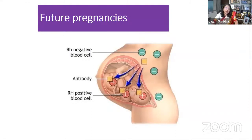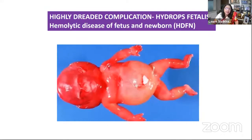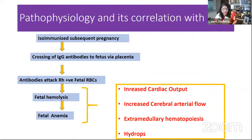In future pregnancies, if the mother is sensitized, antibodies are already present in the maternal circulation. When there is a breach, these antibodies cross the placental barrier, enter the fetal circulation, and start causing hemolysis in the fetus. This is the dreaded complication — hemolytic disease of the fetus and newborn. During the antenatal period, this hemolysis can cause fetal anemia, hydrops fetalis, and fetal death. In the neonatal period, this can lead to neonatal jaundice, kernicterus, cerebral palsy, and neonatal death.